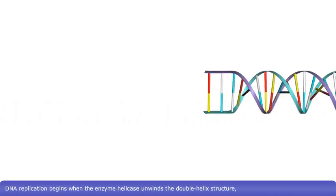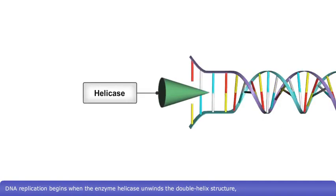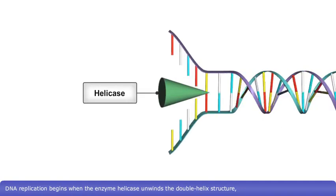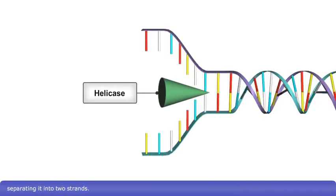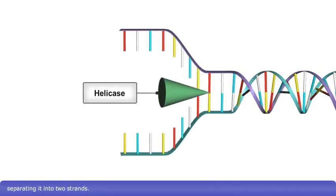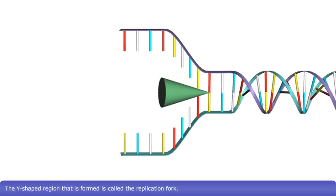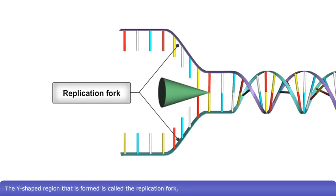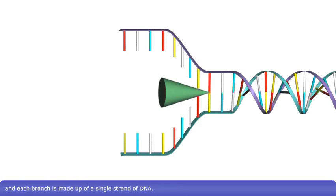DNA replication begins when the enzyme helicase unwinds the double helix structure, separating it into two strands. The Y-shaped region that is formed is called the replication fork, and each branch is made up of a single strand of DNA.